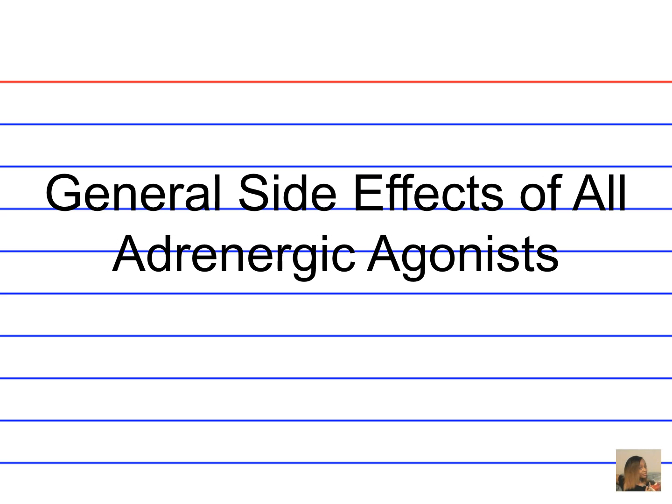What are the general side effects of all adrenergic agonists? There are about 10. First: headache, restlessness, insomnia, euphoria, and palpitations. Then: dysrhythmias, tachycardia, hypertension, pulmonary edema, and last, cardiac arrest.